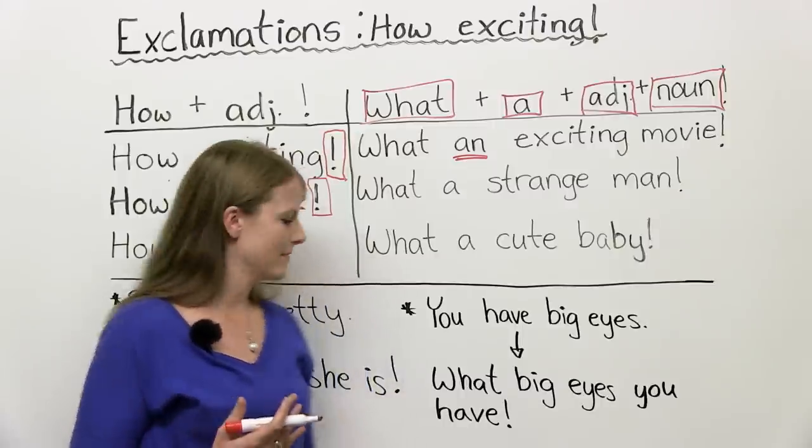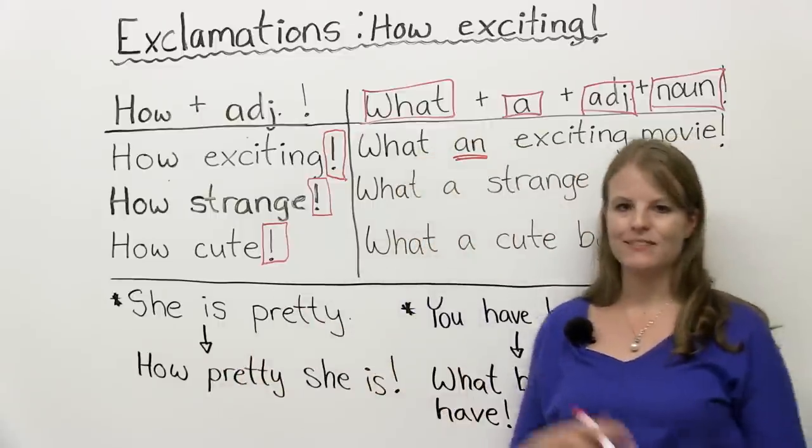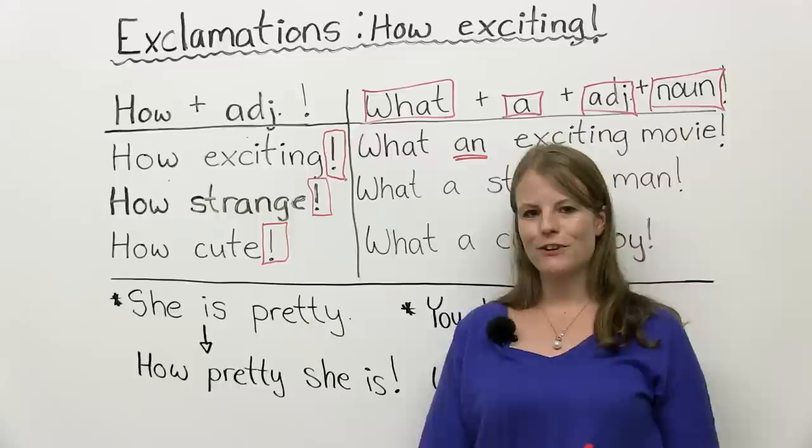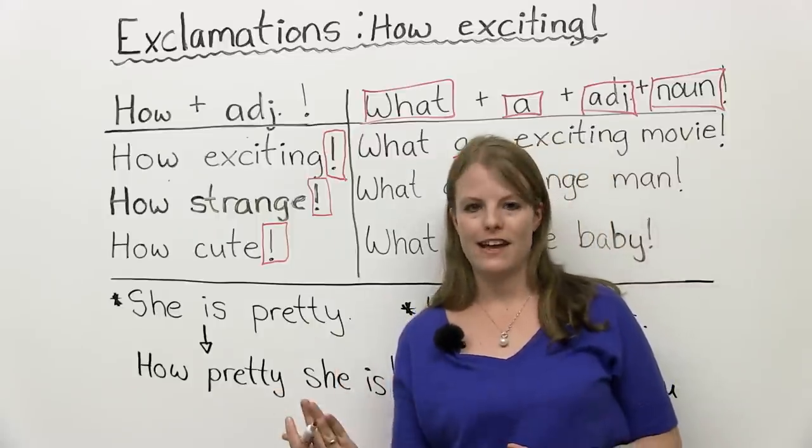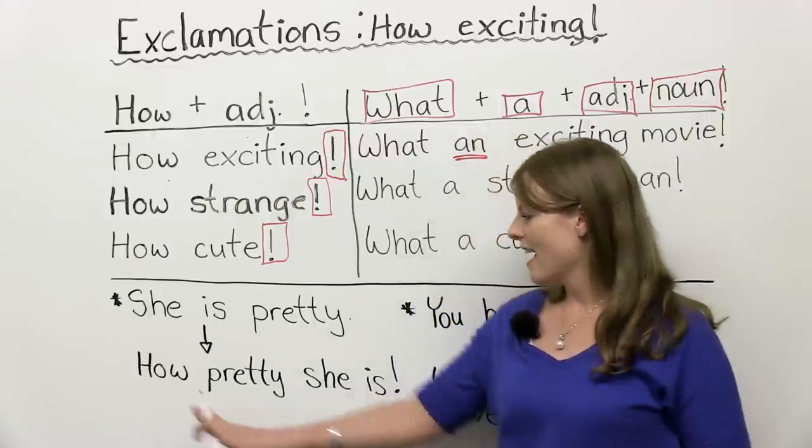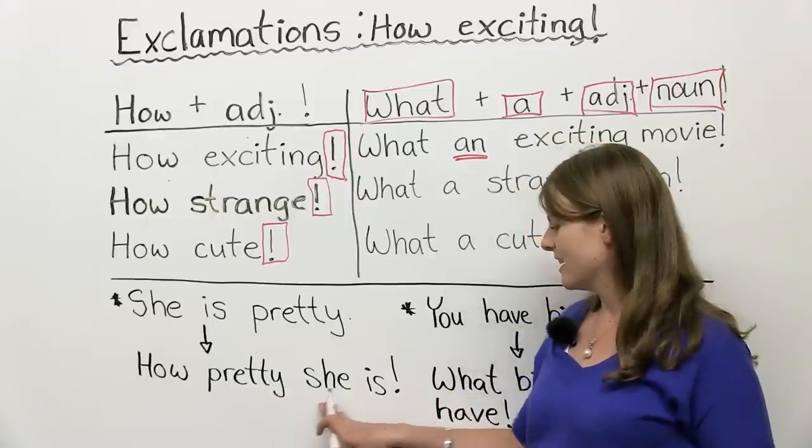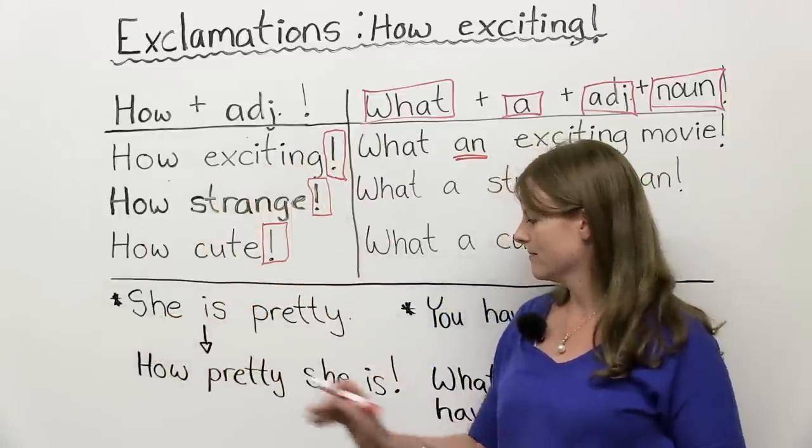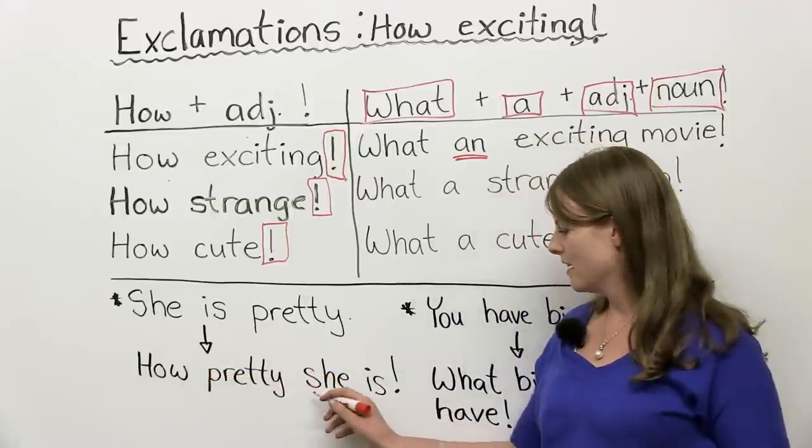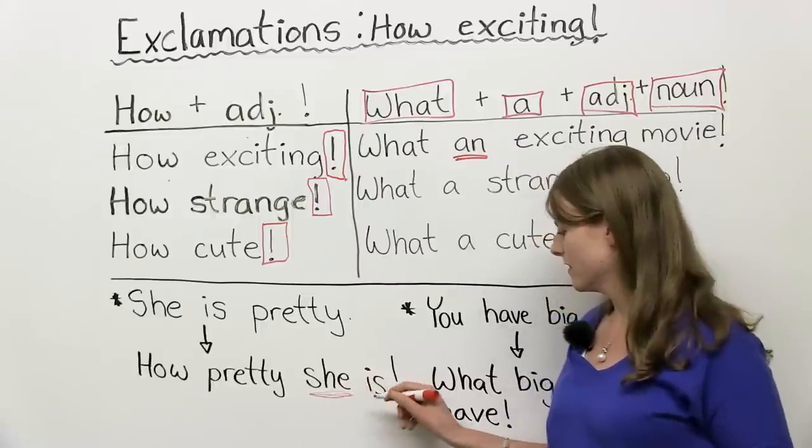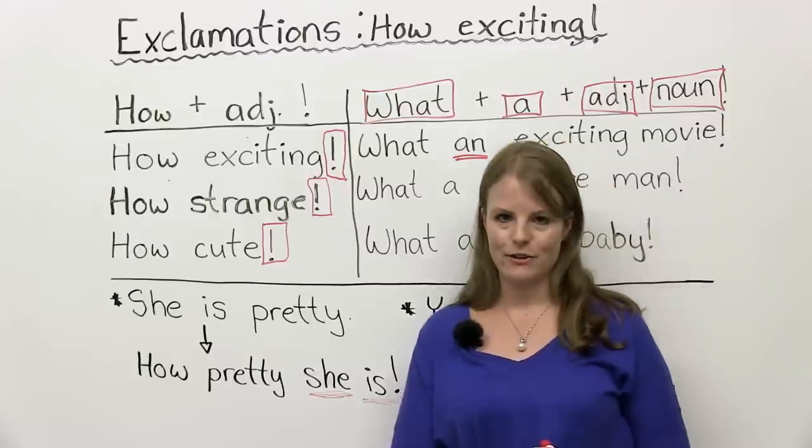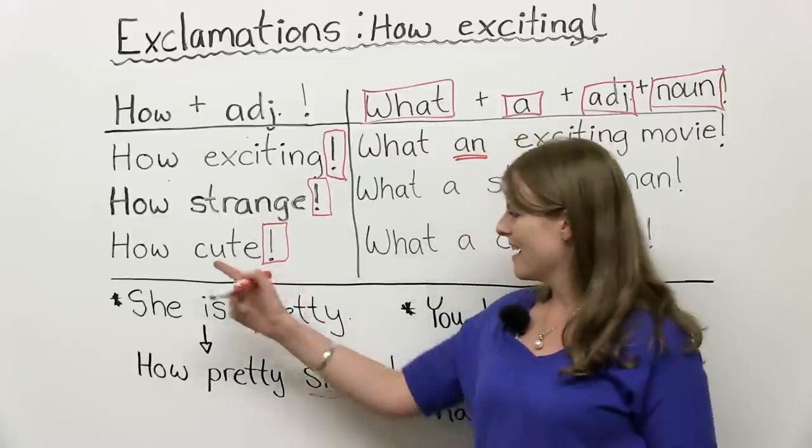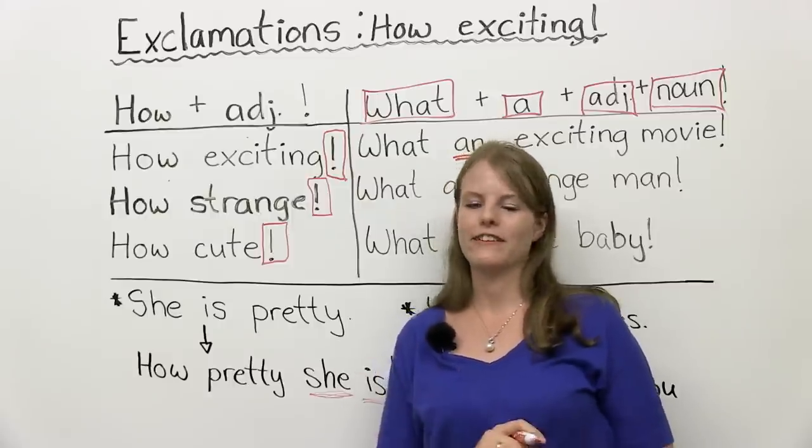But there's another way to do this. So we have with how. Maybe you have a sentence. She is pretty. Oh, she's very pretty. She is pretty. You can say this a different way, especially in conversation. You can say, how pretty she is. So it's just like what we did up here, but we are adding the subject and the verb. And notice the order. How pretty she, so subject first, is. How exciting the movie was. How strange the man is. How cute the babies are. Here are some more examples of this.